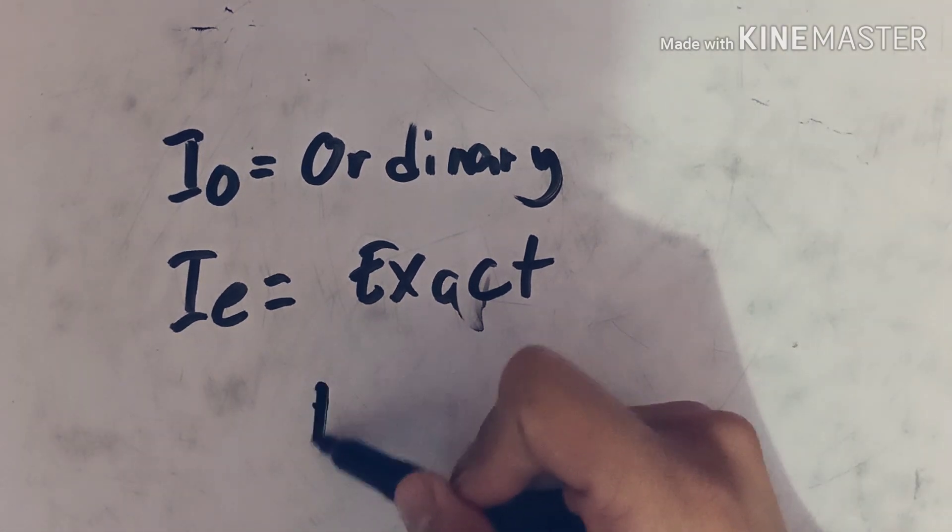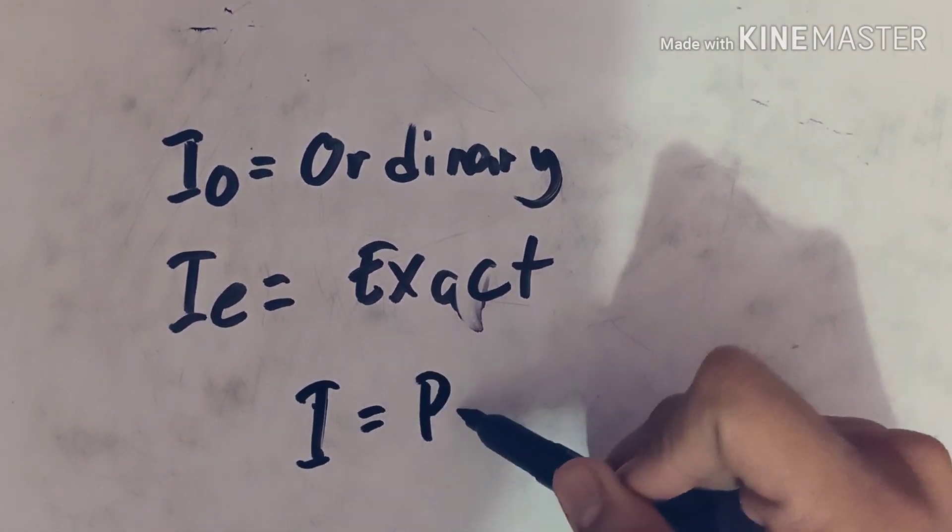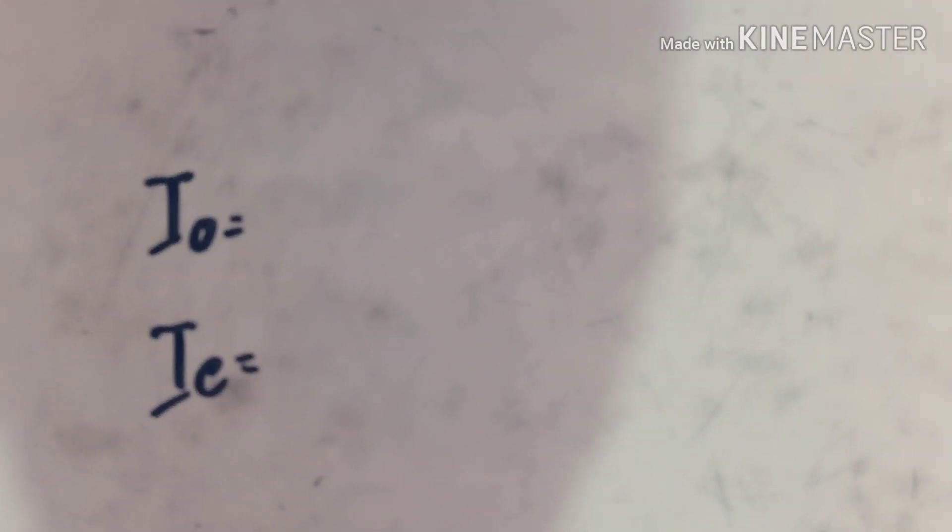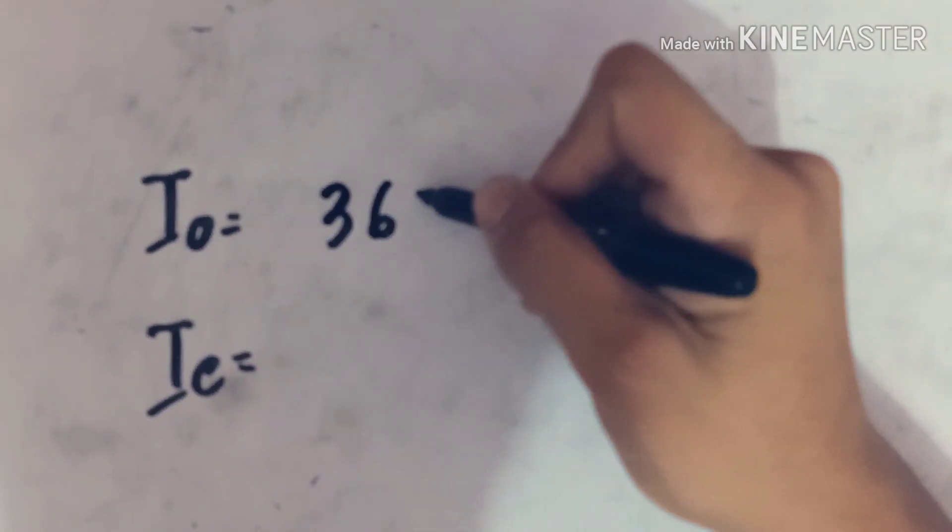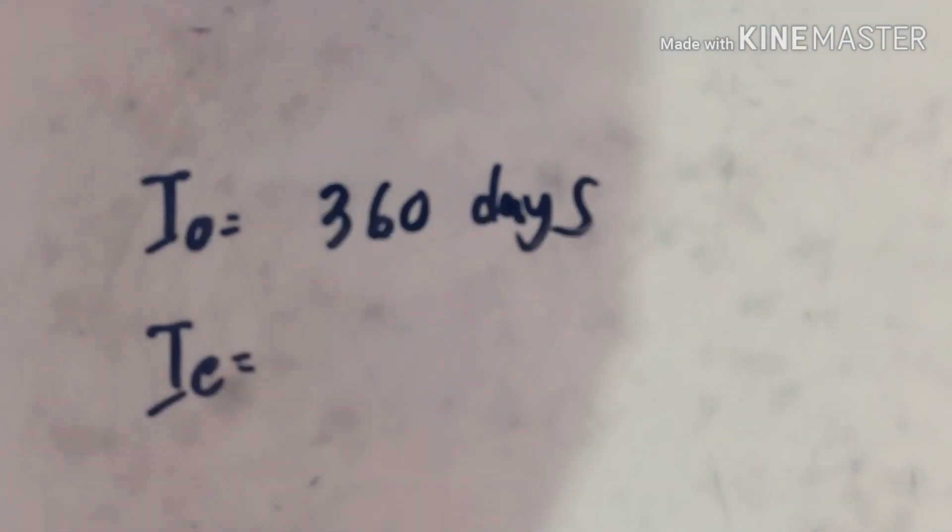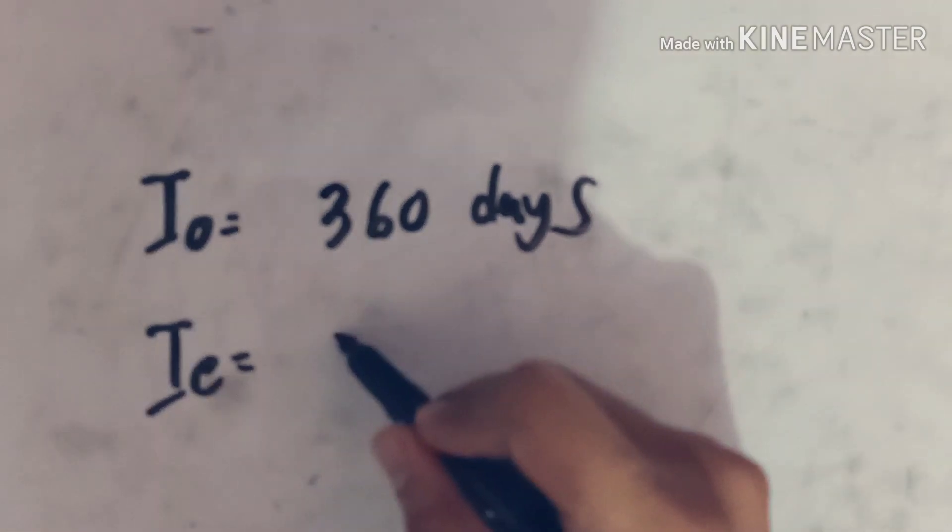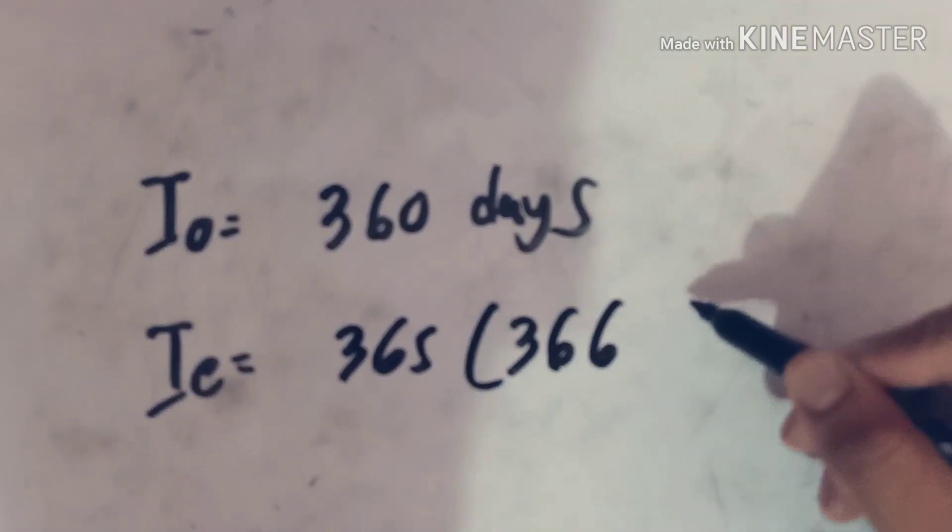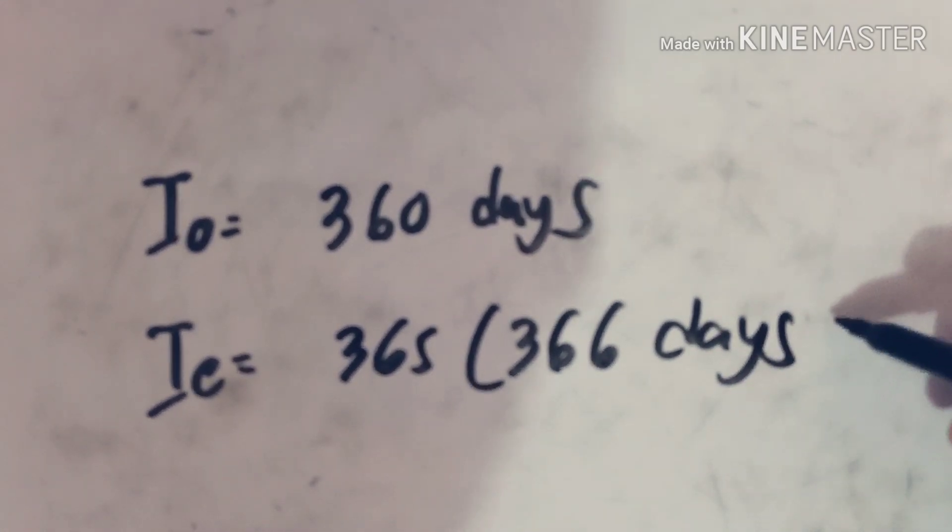I equals P R T. Ordinary interest is a simple interest that uses 360 days as the equivalent number of days in a year, and exact interest is a simple interest that uses the exact number of days in a year, which is 365 or 366 days.